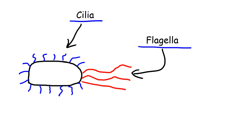Now let's discuss cilia and flagella, which also play a role in the movement of a cell. Cilia consist of tiny, short, hair-like structures, and there are many of them. Flagella consist of long, whip-like structures, and there are only a few of them. The flagella can propel a cell forward from one location to another. Both of these structures are made up of microtubules.